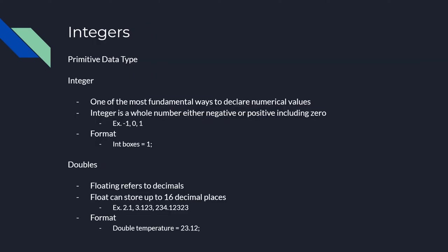Now onto integers. Integers are a primitive data type and they're the most fundamental way to declare numerical values. For example, if you're creating a program that calculates the cost of apples you purchase at the grocery store and you want to show the user how many apples you purchased, you would use an integer. Just like in math, an integer is a whole number, either negative or positive, or including zero. You would format it with the data type 'int' first, followed by a name, then an equal sign to assign the value — for example, just one.